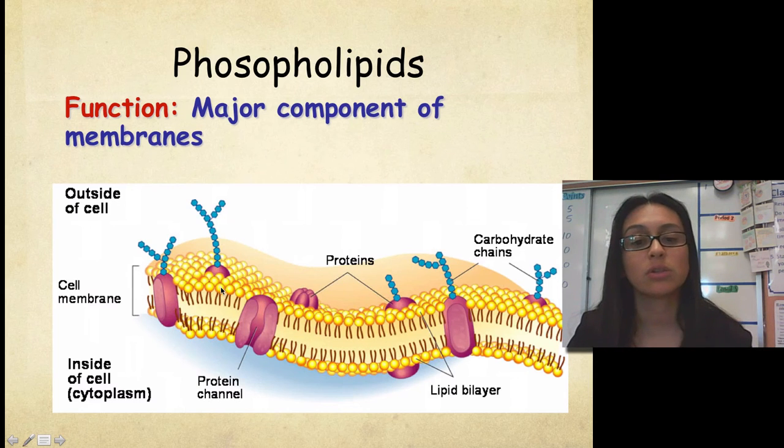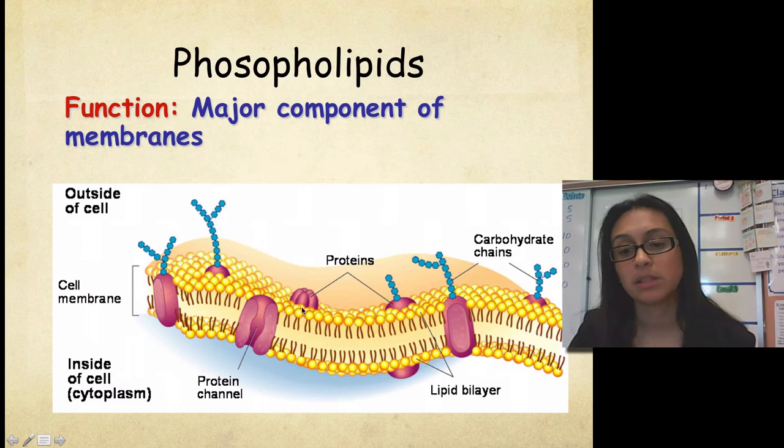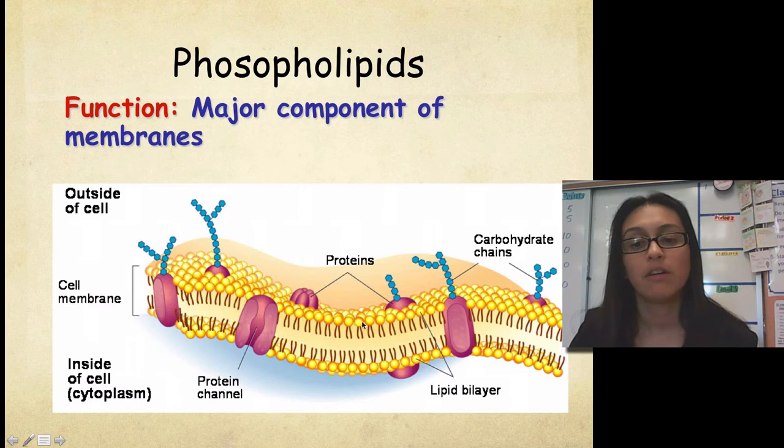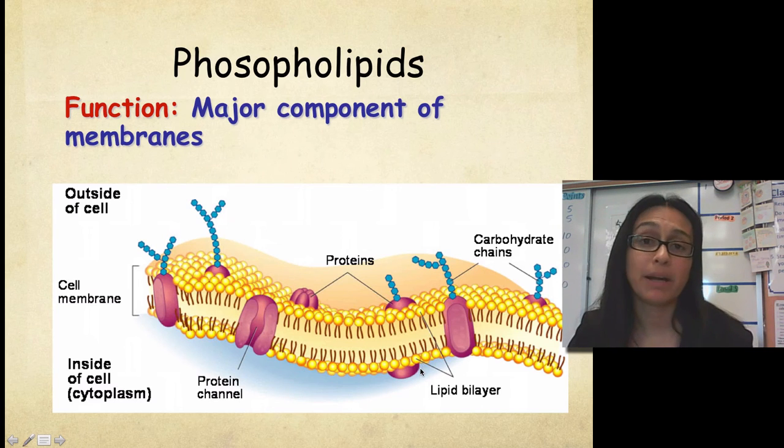So remember the circle represents the hydrophilic end, and the tails represent the hydrophobic end. One thing you should notice about this image here is that we have kind of like a layer of phospholipids on one side and another layer on the other side, we have the hydrophilic ends to the outside and the hydrophobic tails in the middle. This is called a lipid bilayer.